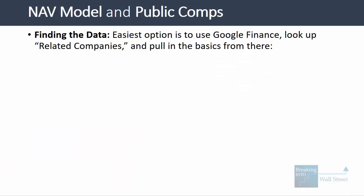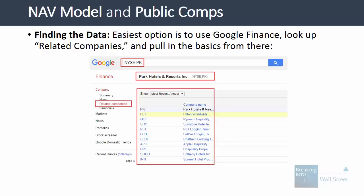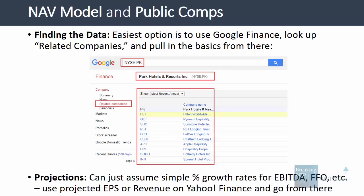To find the data, the easiest option is Google Finance — look up related companies for Park Hotels, for example, to get comparable companies and basic numbers. For projected numbers, use simple percent growth rates for EBITDA and FFO. The most important items to gather are market cap, historical financials, and beta for the discount rate calculation. You can get EPS and revenue growth projections from Yahoo Finance for free and apply them to EBITDA, FFO, and other metrics.